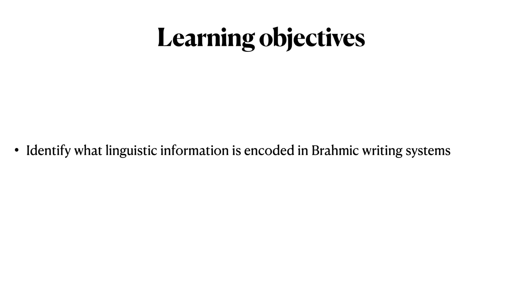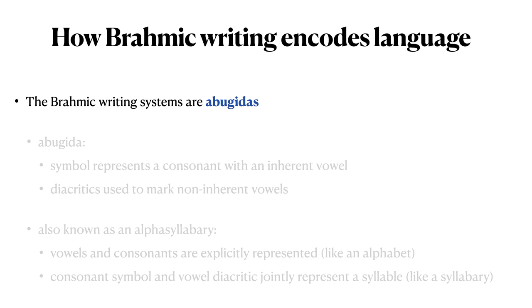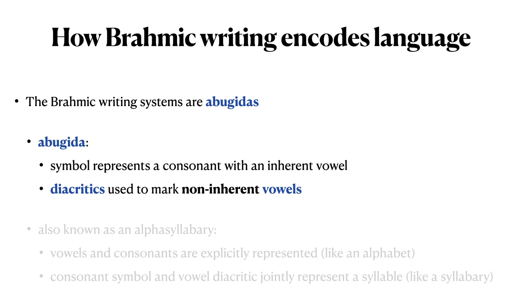Our learning objective is to identify what linguistic information is encoded in the Brahmic writing systems. The Brahmic writing systems are abugidas. An abugida is a phonographic writing system in which each symbol represents a consonant, and each symbol is associated with an inherent vowel. In an abugida, diacritics are used to mark non-inherent vowels. We'll look at an example of what that means in a few slides.